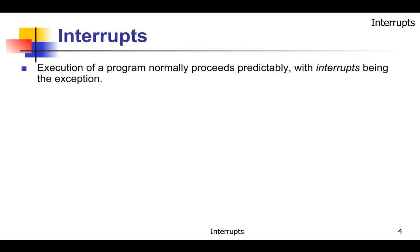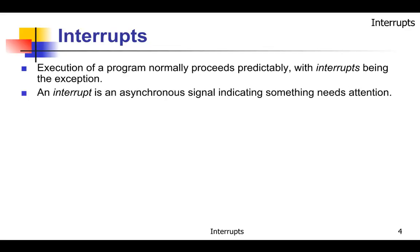An interrupt is an interruption in the execution of a program. The execution normally proceeds predictably, with interrupts being the exception. An interrupt is an asynchronous signal indicating something needs attention. Asynchronous means it could happen at any point, unlike synchronous execution which goes in step with a clock from one instruction to the next. The asynchronous event could be someone pushing a button like the doorbell, a timer running out, or various unpredictable things.